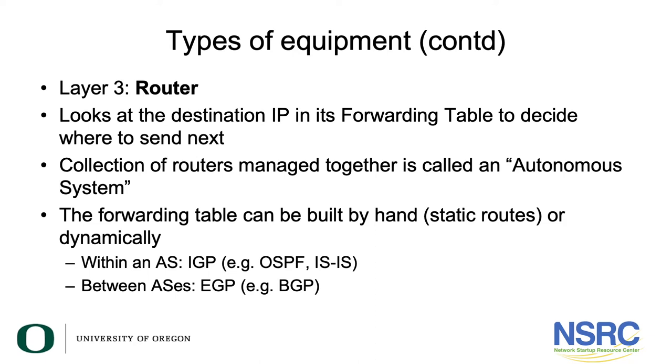What kind of equipment works at layer 3? By definition, that is a router. A router's job is to look at the destination IP address in a datagram, look that up in its forwarding table to decide where to send it next. A collection of routers working together and managed under the same administrative control is called an autonomous system, and multiple autonomous systems linked together — different organizations, different ISPs, different universities — form the entire internet.